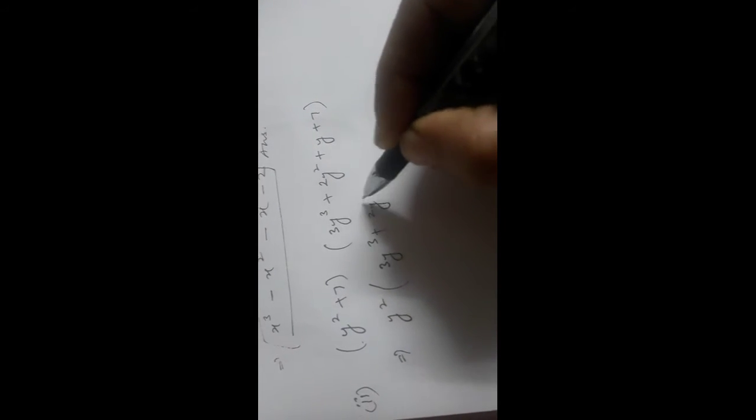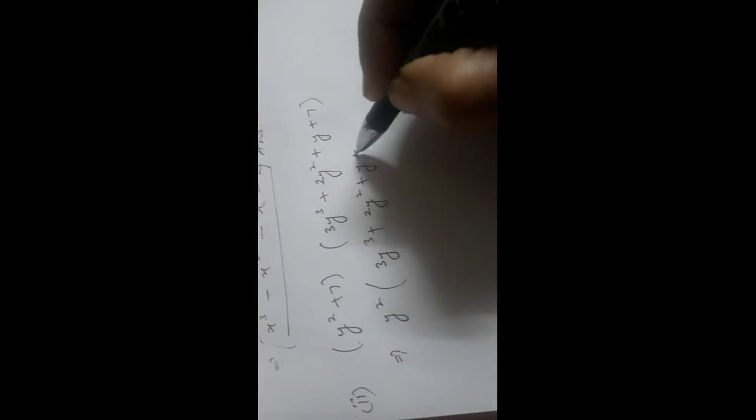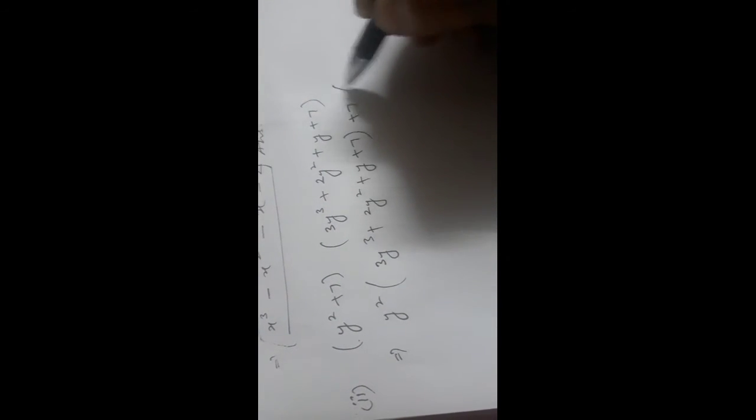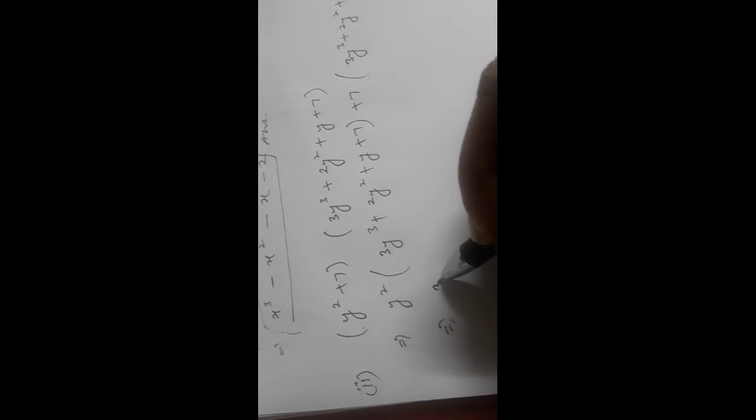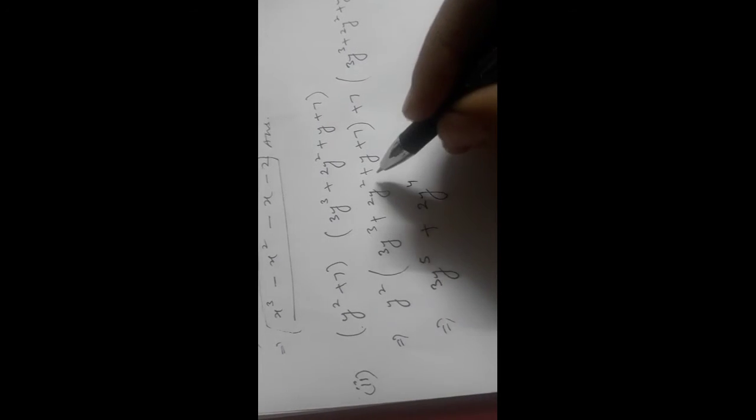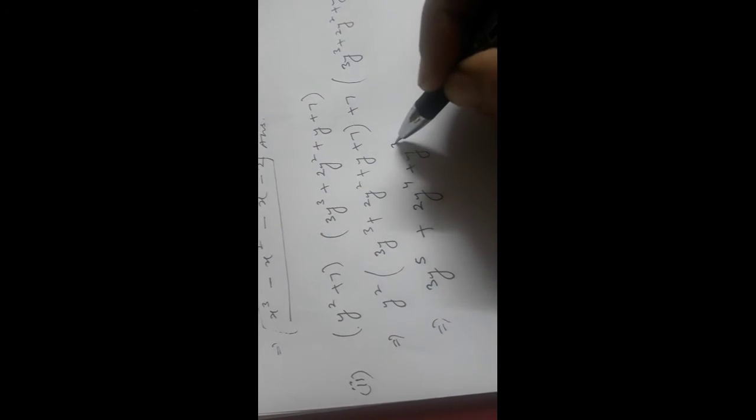Now Part 2: (y² + 7) is getting multiplied with (3y³ + 2y² + y + 7). y² multiplied by 3y³ gives 3y⁵. y² multiplied by 2y² gives 2y⁴. y² multiplied by y gives y³. And 7 multiplied by y² gives 7y².